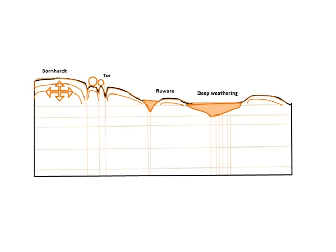Once the material is stripped away completely, different shapes emerge with different names. A bornhardt is a large dome-shaped feature — sometimes called a dome, though geologists use 'dome' for the entire granite feature. In the exam, use 'dome' if the question requires it. Tors form within smaller joint compartments, creating boulders piled on each other. An outcrop of rock flush with the surface — without a steep side — is called a ruware.